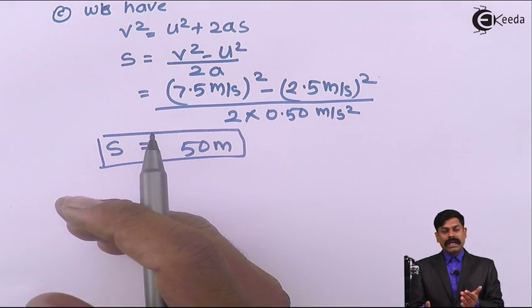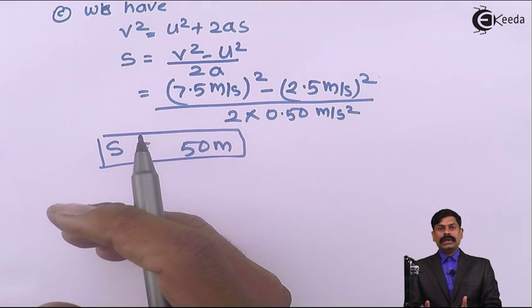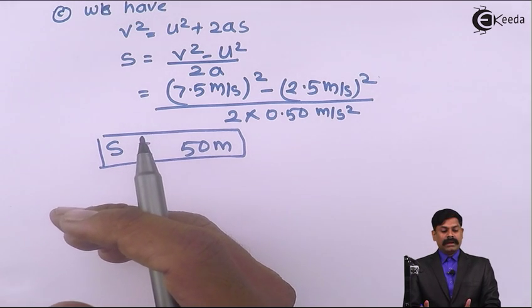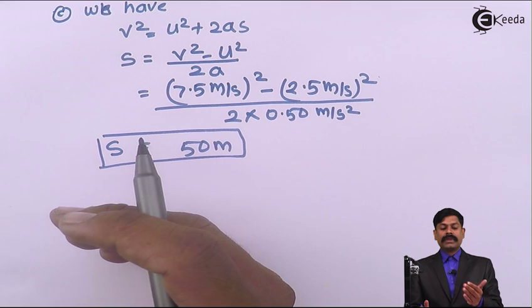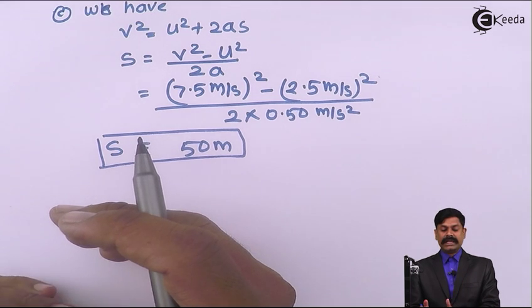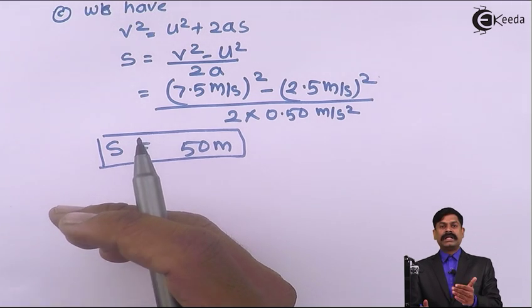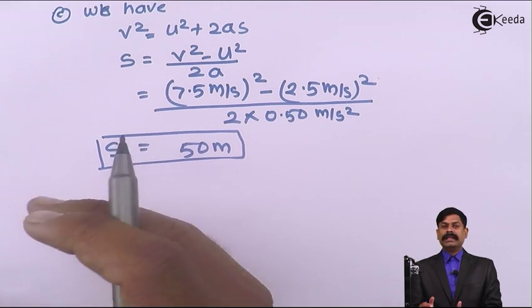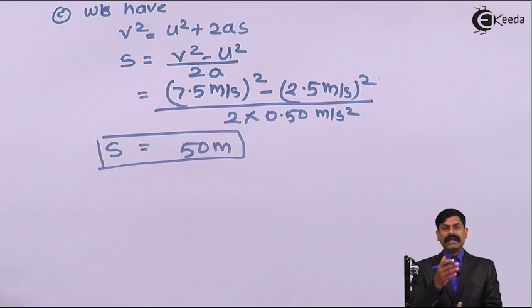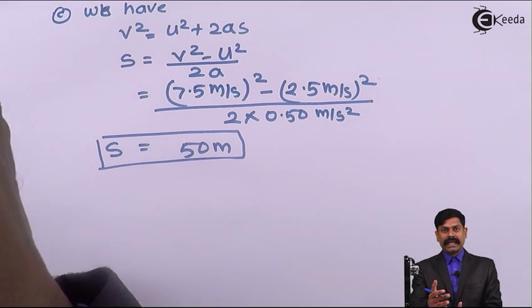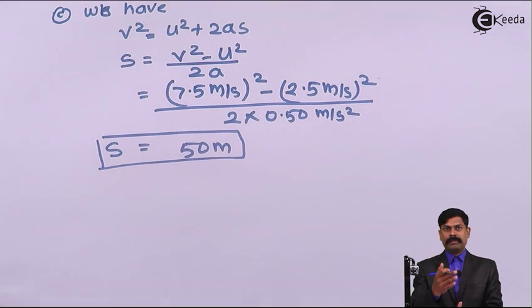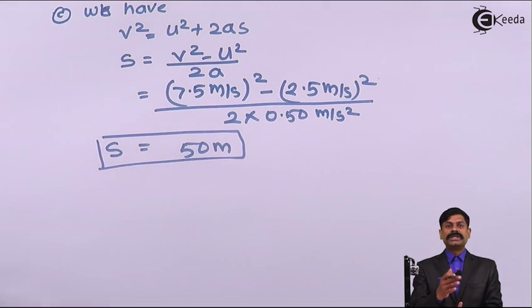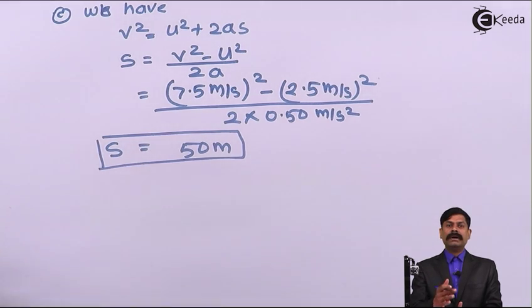So we have now learned that if the initial velocity, final velocity, and acceleration of a particle are given, then we can determine how much distance the particle will cover within a given time.